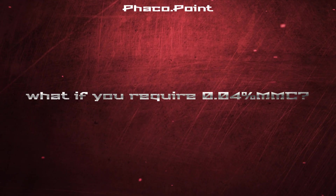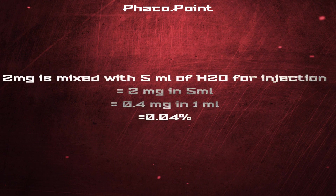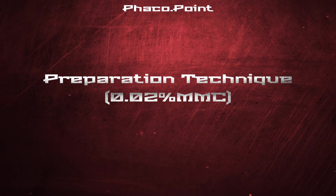In some surgeries you may require a 0.04% Mitomycin C solution. To prepare 0.04% Mitomycin C, you add 5 ml of water for injection to the vial containing 2 mg of Mitomycin C. That is, 5 ml of water for injection with 2 mg of Mitomycin C gives you a resultant solution of 0.04%. Let's now move to see how it is actually reconstituted.